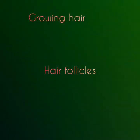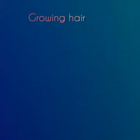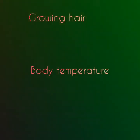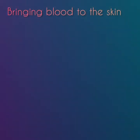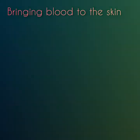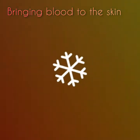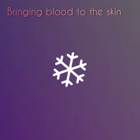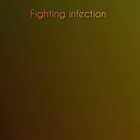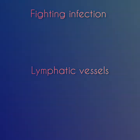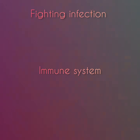Hair follicles found in the dermis layer grow the hair on your head, face, and the rest of the body. Hair also helps to control body temperature and protect the body from injury. Blood vessels in the dermis nourish the skin and help control body temperature. Lymphatic vessels, which drain fluid from the tissues and are an important part of the immune system, are housed in the dermis and help to ward off infection and other harmful substances.